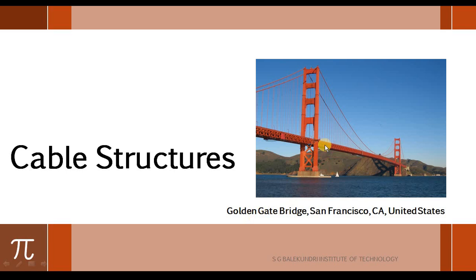The best example of a cable structure is the Golden Gate Bridge in San Francisco, California, United States. You can see here this is the cable which is supporting the bridge deck. The bridge deck has been hung to this cable using what are called suspenders. Whatever load comes on this bridge deck, it will be taken care of by the suspenders through tension. That load is then carried by the cables, which in turn transfer the force to the pillars, and the pillars transfer the force to the foundation. This is how a cable-suspended bridge deck takes the load.